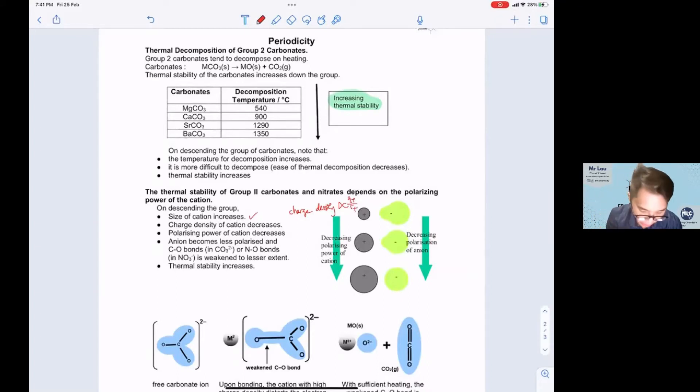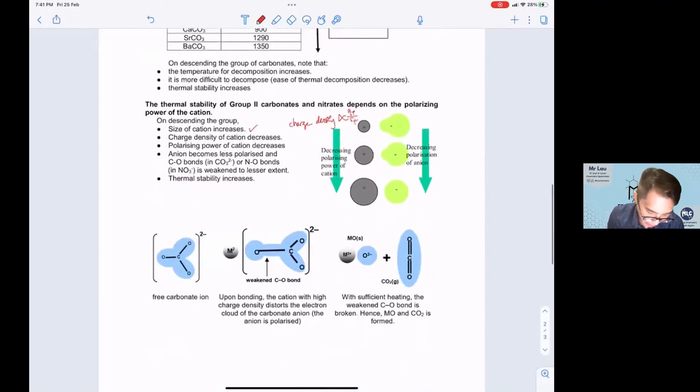Therefore, if the charge density decreases, the polarizing power will decrease as well. So what is this polarizing power? Polarizing power means the ability to distort the electron cloud.